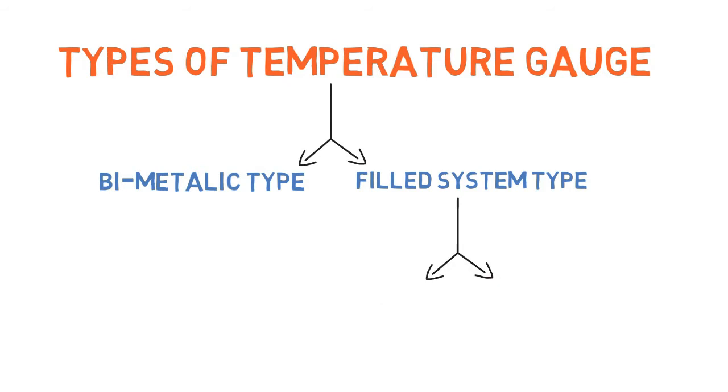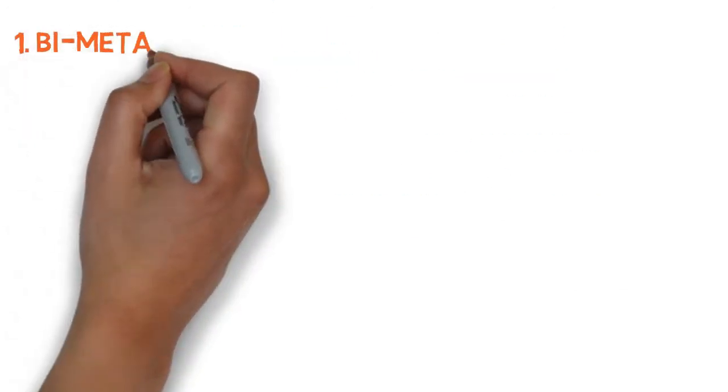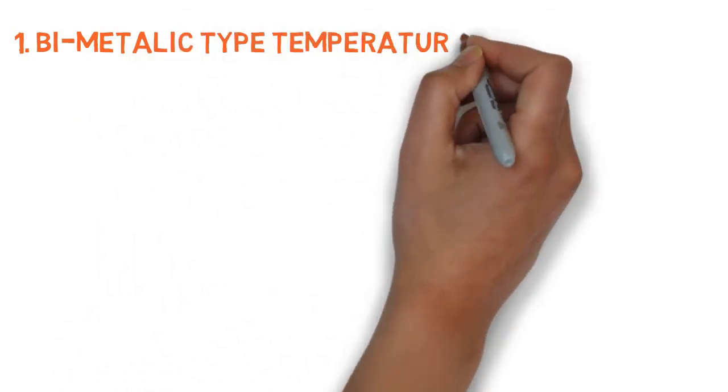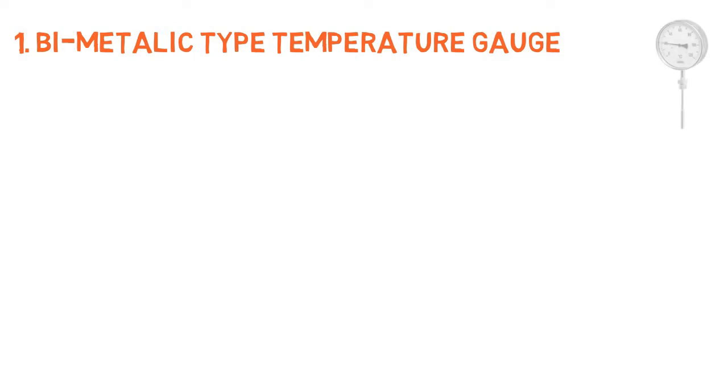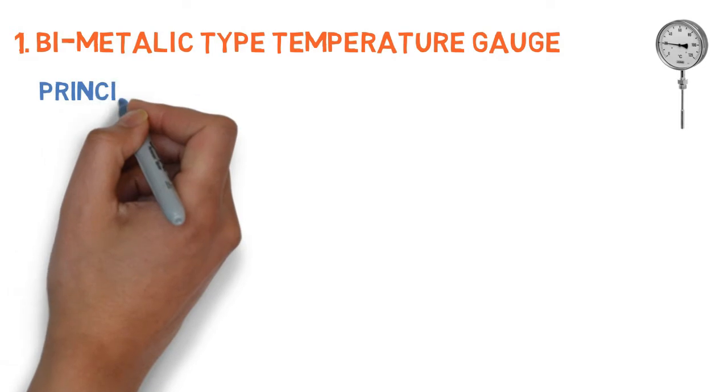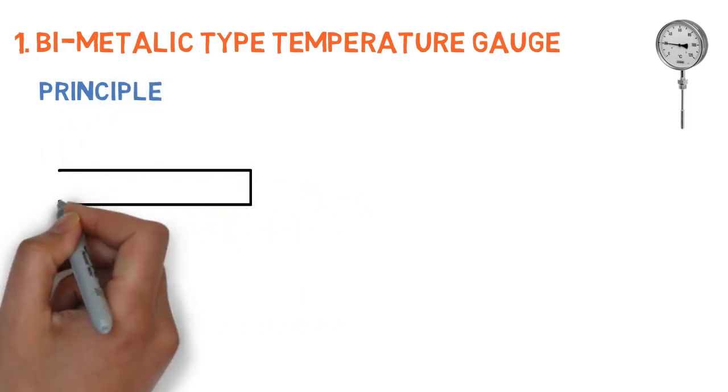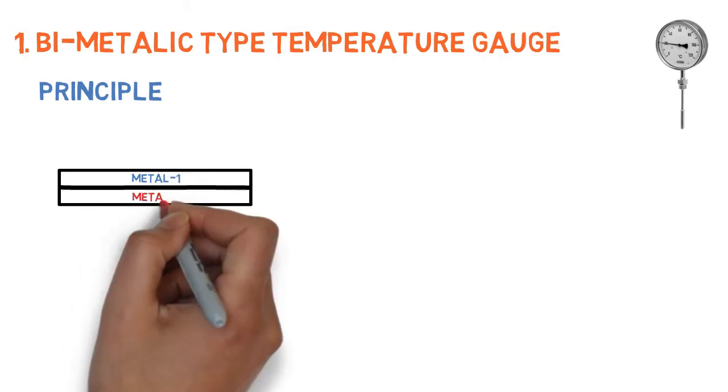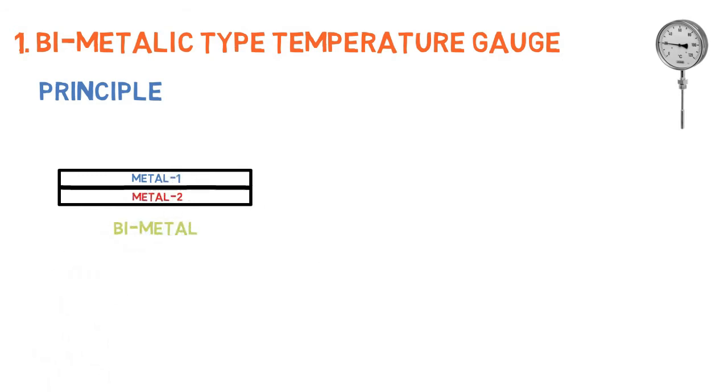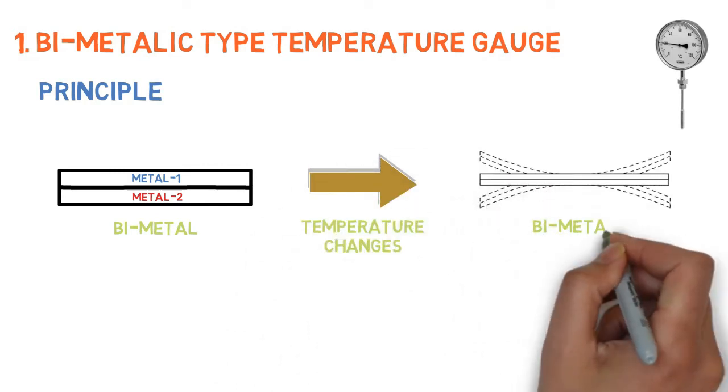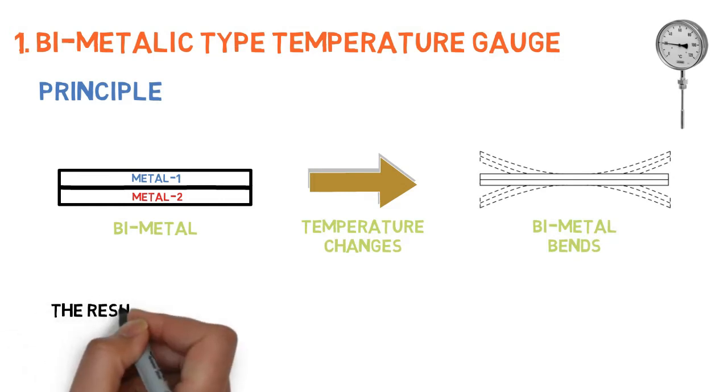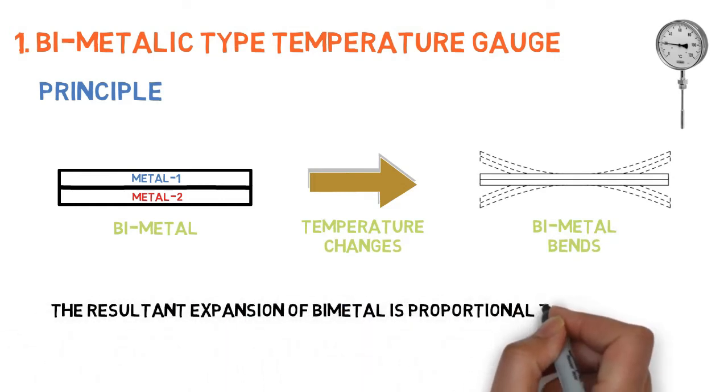The types are liquid filled type and gas filled type. Now we'll see about bi-metallic type temperature gauge in detail. It works on the principle of thermal expansion. Two metals having different coefficients of expansion are joined to form a bimetal. When there is a change in temperature, the bimetallic strip bends. The resultant expansion of bimetal is proportional to temperature.